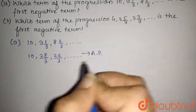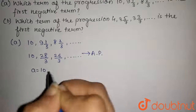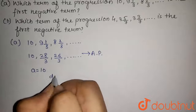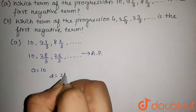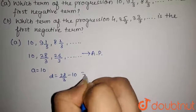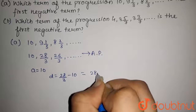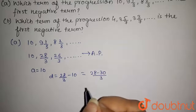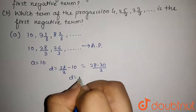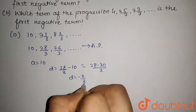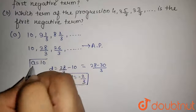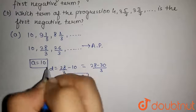The first term a is 10, and the common difference d will be equal to 28/3 minus 10, which is 28 minus 30 upon 3. On solving this, we get d is equal to minus 2/3. So d = −2/3 and a = 10.